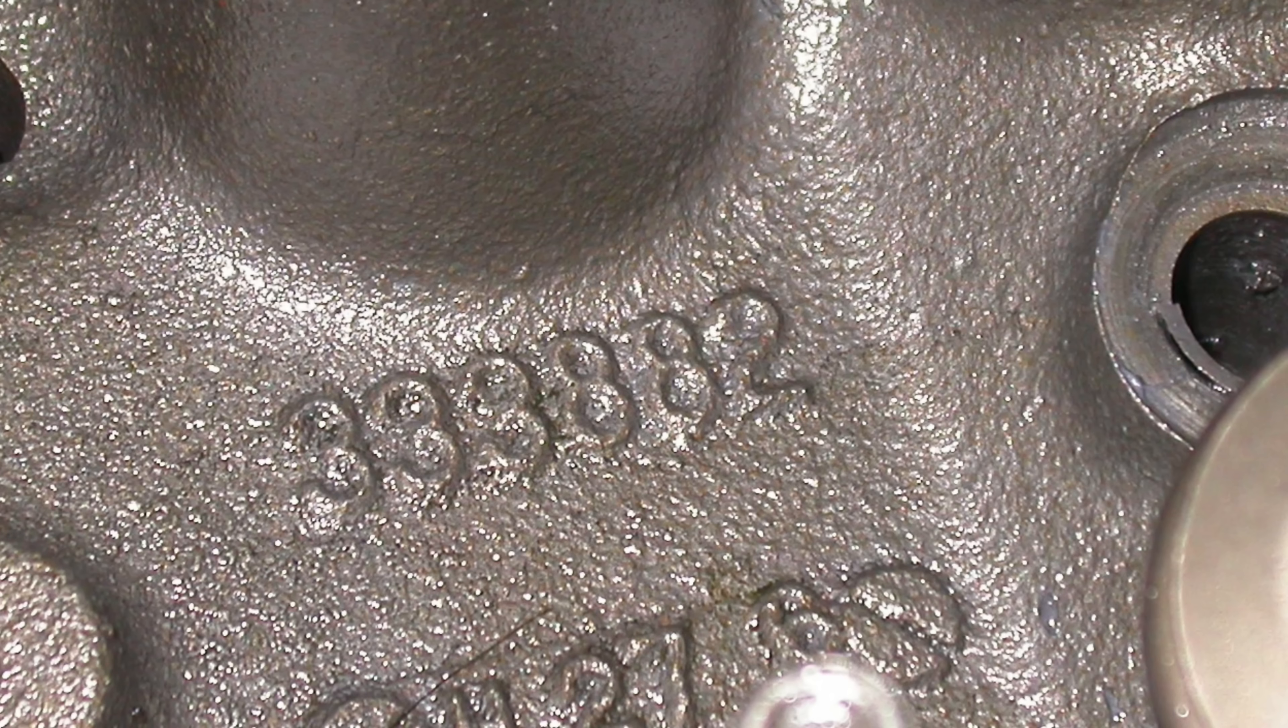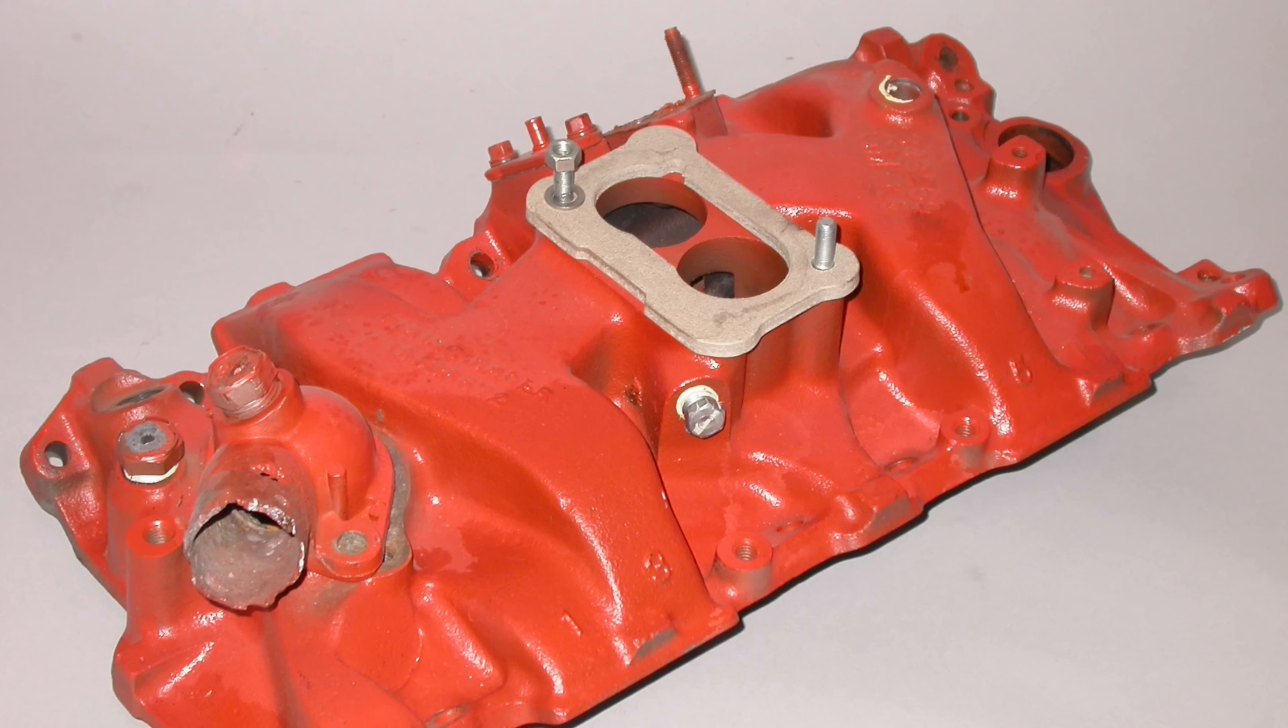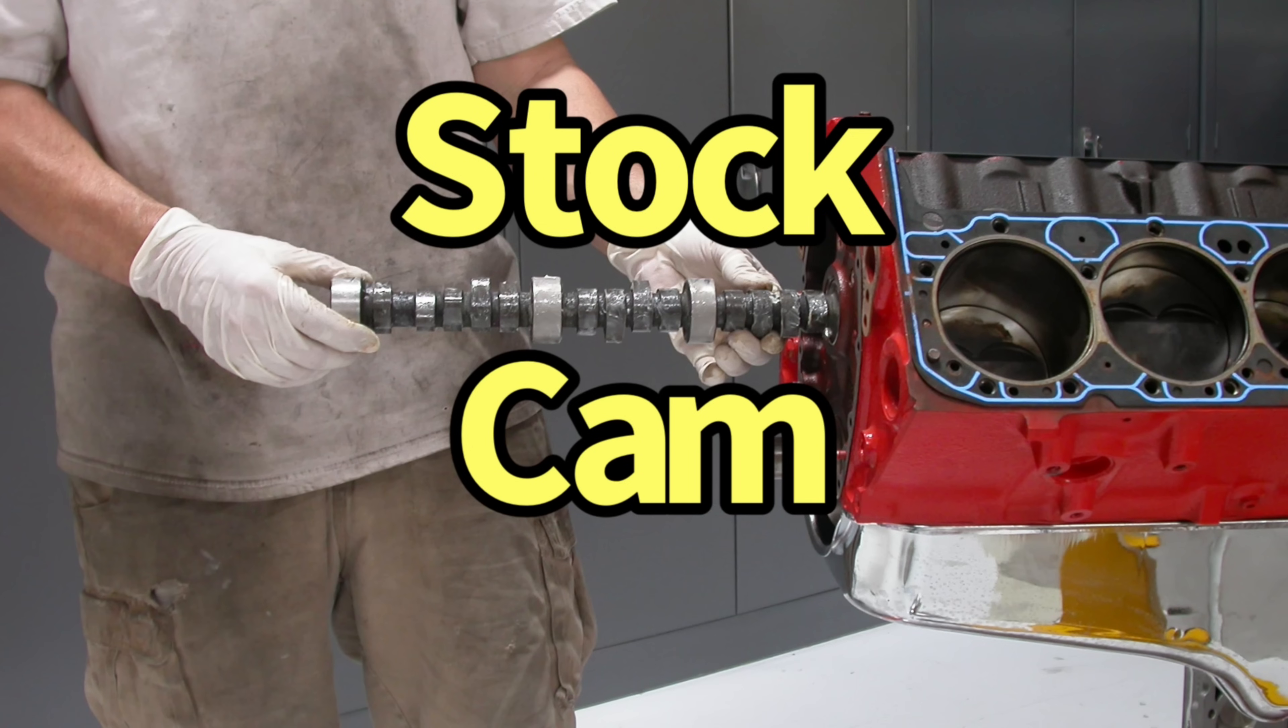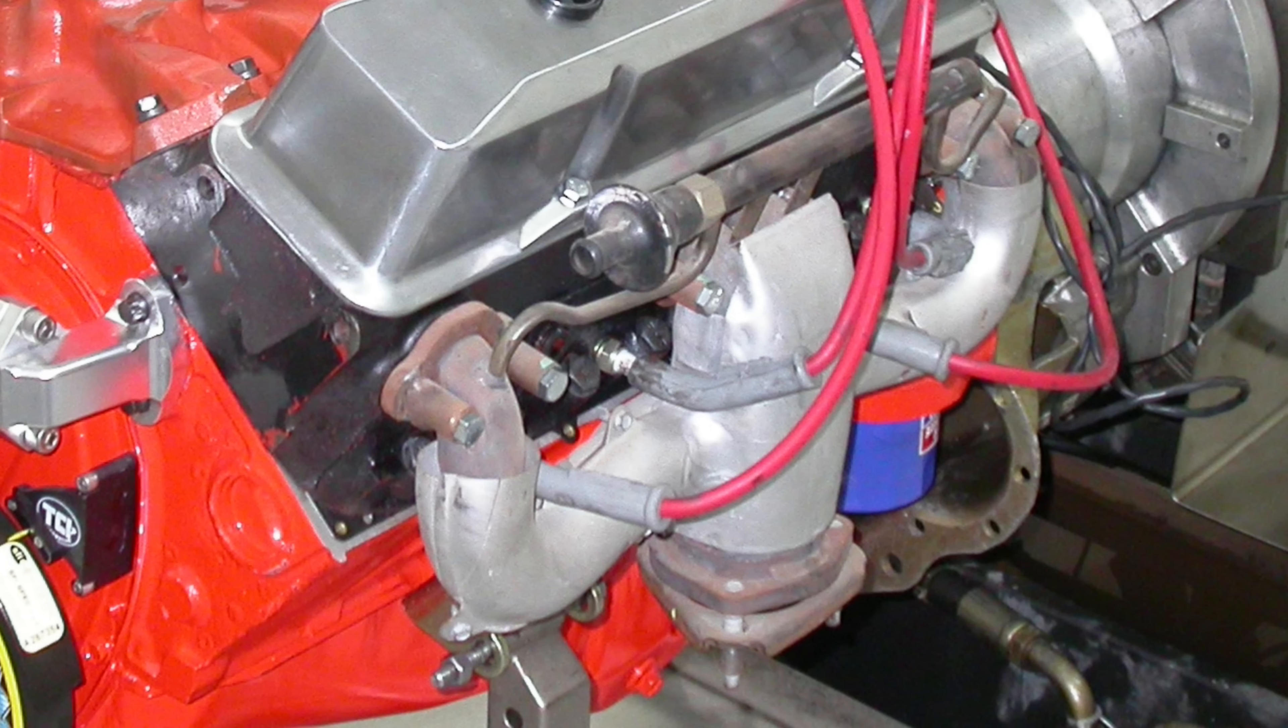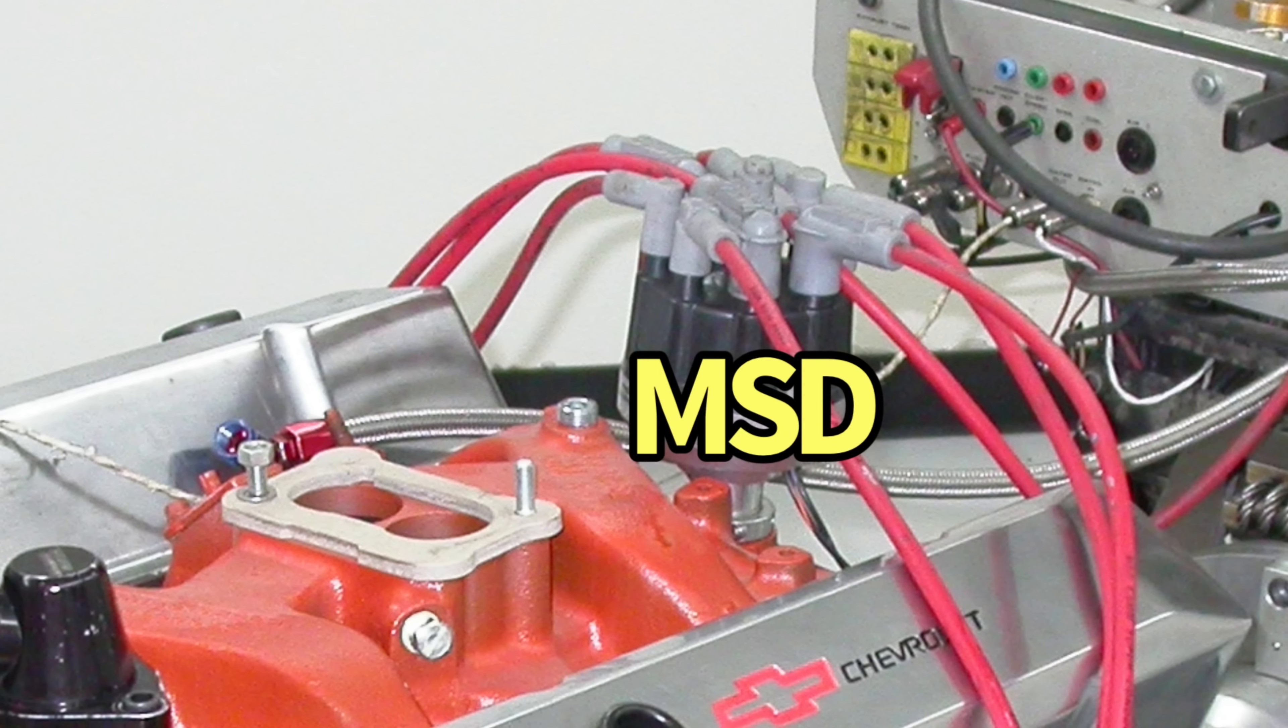We started with this rebuilt short block and installed a set of 882 smog heads - all stock. We had a two-barrel cast iron intake manifold and a two-barrel 2G carburetor. We also installed a very small mild stock replacement camshaft from the local auto parts store - all the listing said is 180 horsepower, stock hydraulic flat tappet camshaft.